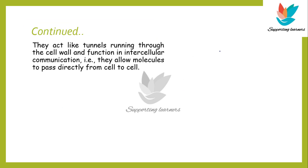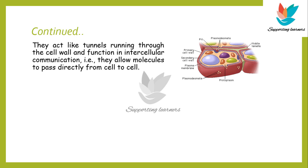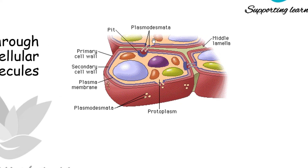Now let's talk about some functions of plasmodesmata. As mentioned, plasmodesmata act as tunnels connecting the cytoplasm of neighboring cells. First, they help in communication — one cell communicates with its neighboring cells with the help of these structures called plasmodesmata. Second, they help in transportation. Substances like proteins and other chemicals are actually transported between the two cells by these connections called plasmodesmata.